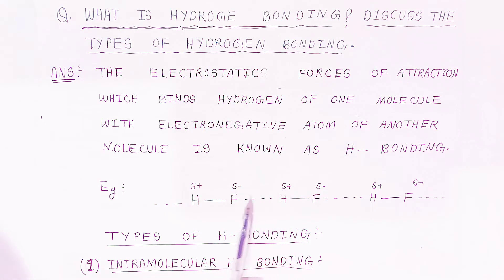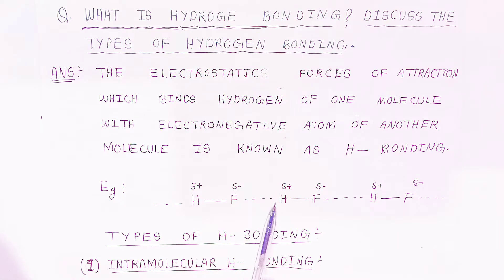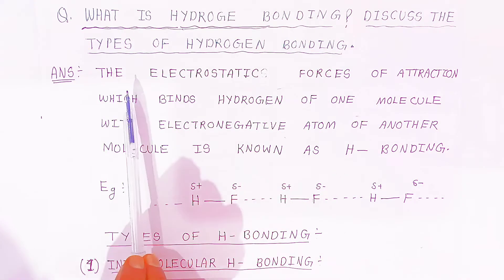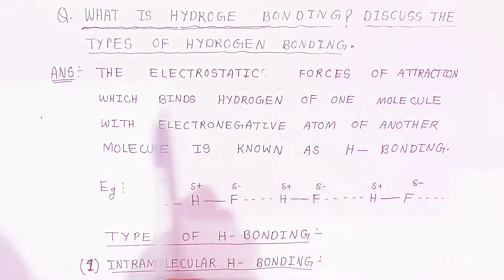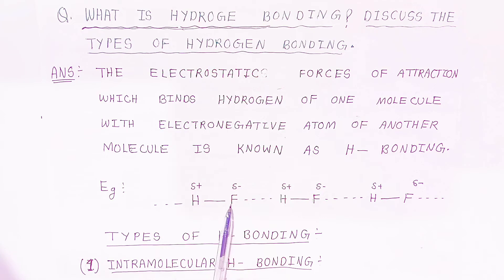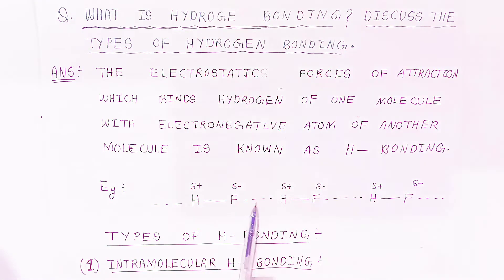This dotted line represents the electrostatic force of attraction, and this is called hydrogen bonding. So to summarize: the electrostatic force of attraction which binds hydrogen of one molecule with the electronegative atom of another molecule is known as hydrogen bonding. There are two main types of hydrogen bonding.